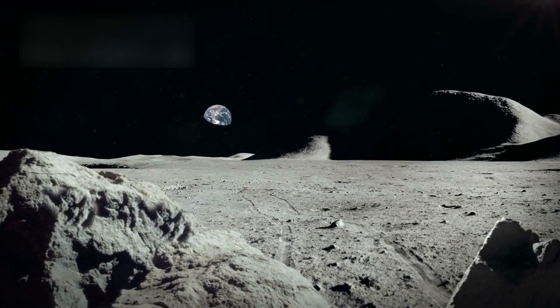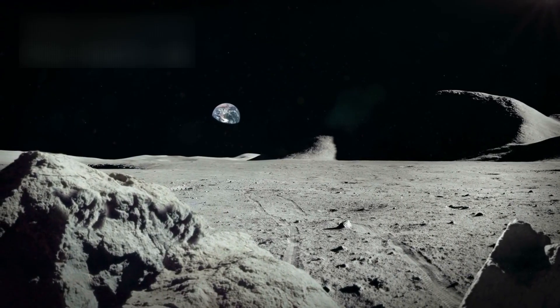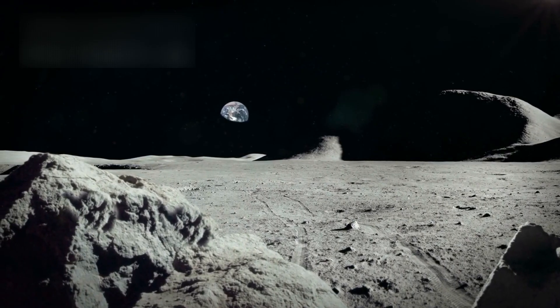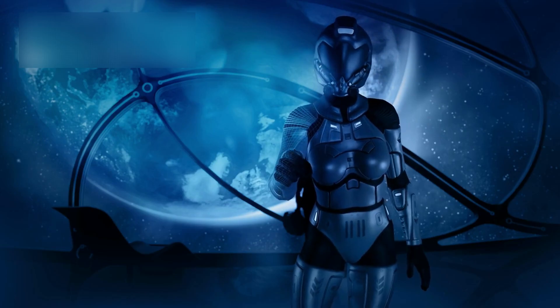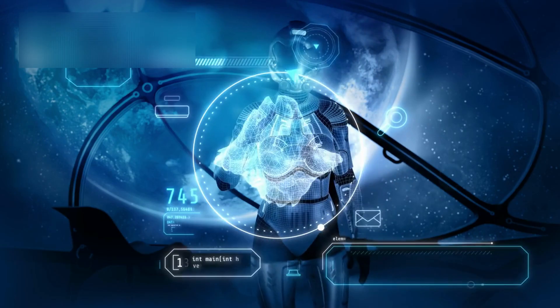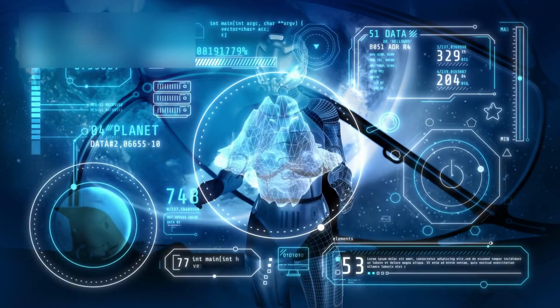Charon's surface is scarred by enormous canyons and fractures, some stretching thousands of kilometers across. These features point to ancient tectonic activity, evidence that Charon, like Pluto, was once far more active than it appears today.